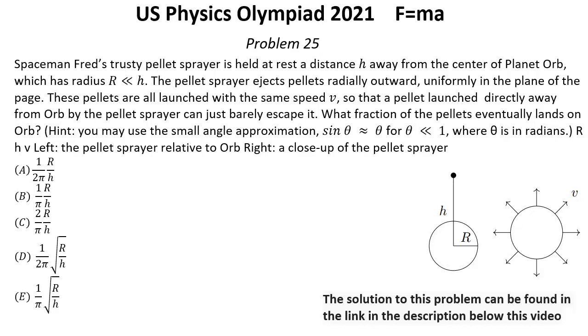You may use the small angle approximation: sin θ ≈ θ for θ << 1, where θ is in radians. The left picture shows the pellet sprayer relative to Orb, and the right picture shows a close-up of the pellet sprayer.